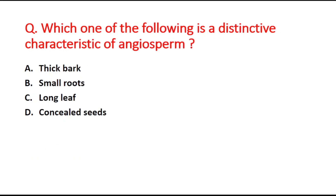Next question: which one of the following is a distinctive characteristic of angiosperms? Option A is thick bark, option B is small roots, option C is long leaf, and option D is enclosed seeds. The right answer is option D, enclosed seeds.